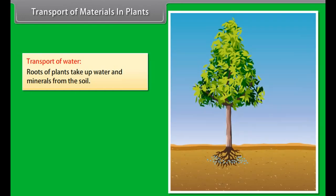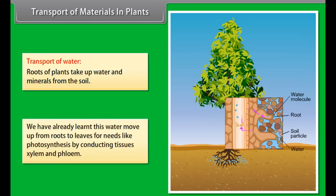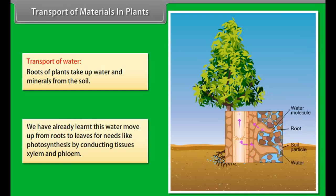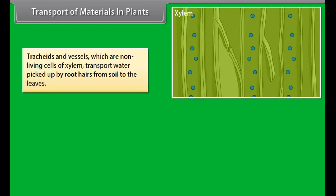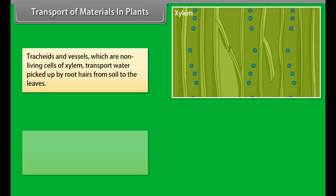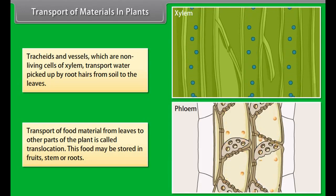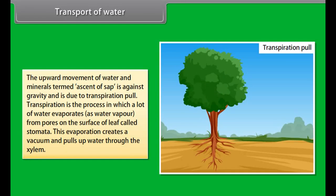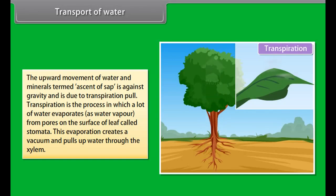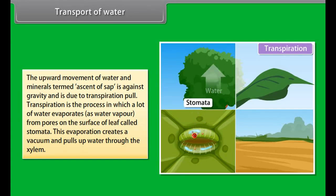Transport of materials in plants: Roots take up water and minerals from the soil. Water moves up from roots to leaves for photosynthesis through conducting tissues — xylem and phloem. Tracheids and vessels, which are non-living cells of xylem, transport water picked up by root hairs from the soil to the leaves. Transport of food from leaves to other parts of the plant is called translocation; this food may be stored in fruits, stem or roots. The upward movement of water and minerals, termed ascent of sap, works against gravity and is due to transpiration pull. Transpiration is the evaporation of water as water vapour from pores on the leaf surface called stomata, which creates a vacuum and pulls water up through the xylem.